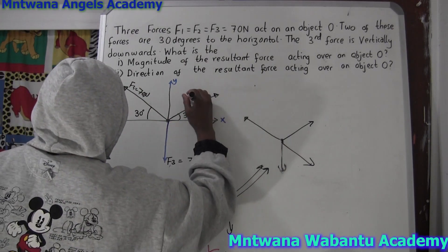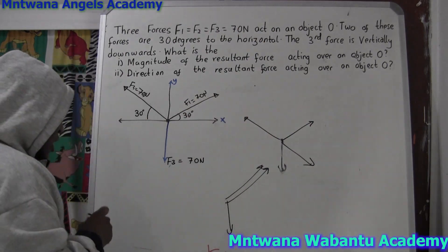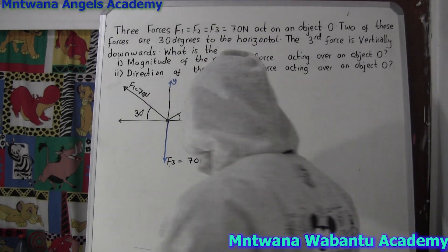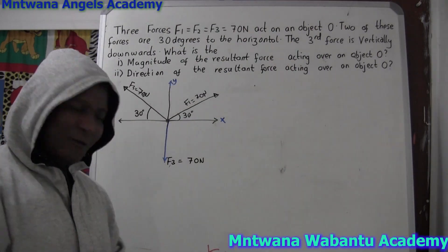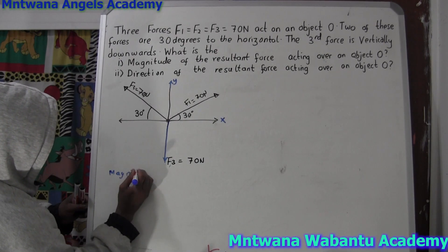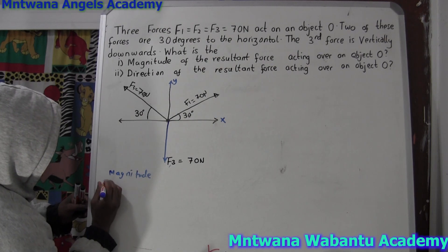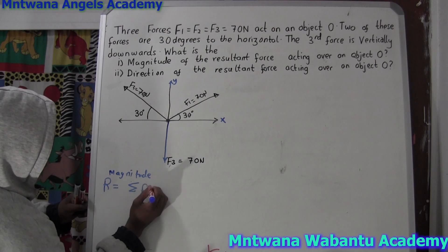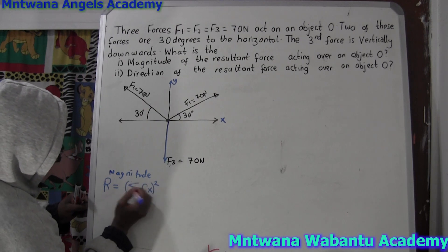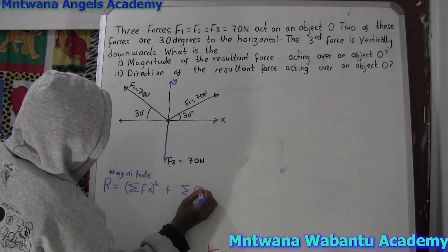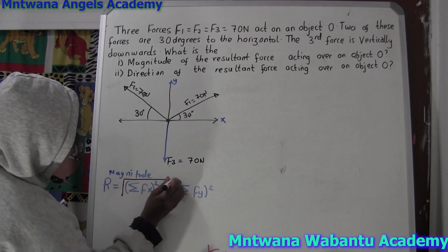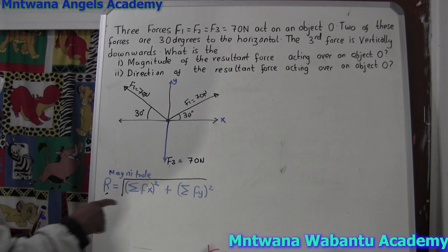Now, they ask us to find the magnitude and direction of the resultant. To get the magnitude, we use this formula: the magnitude of the resultant vector equals the square root of the sum of all x-forces squared, plus the sum of all y-forces squared. So we need to find ΣFx and ΣFy.